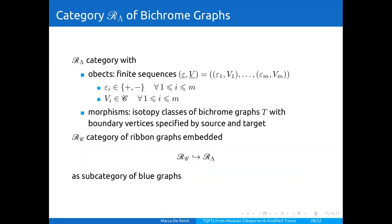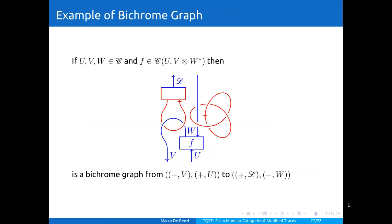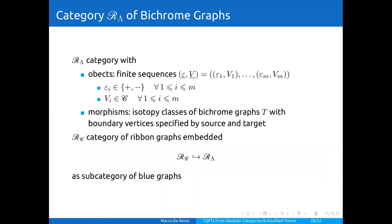Bichrome graphs can be arranged as morphisms of a category. There is a category of bichrome graphs whose objects are finite sequences of orientations and labels given by objects of C, and whose morphisms are isotopy classes of bichrome graphs with boundary vertices specified by source and target. The category of ribbon graphs in the sense of Turaev can be included in the category of bichrome graphs as the subcategory of exclusively blue graphs.